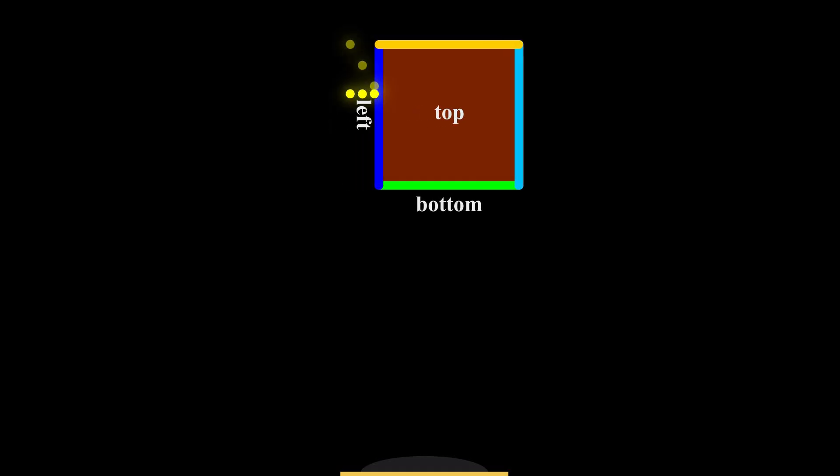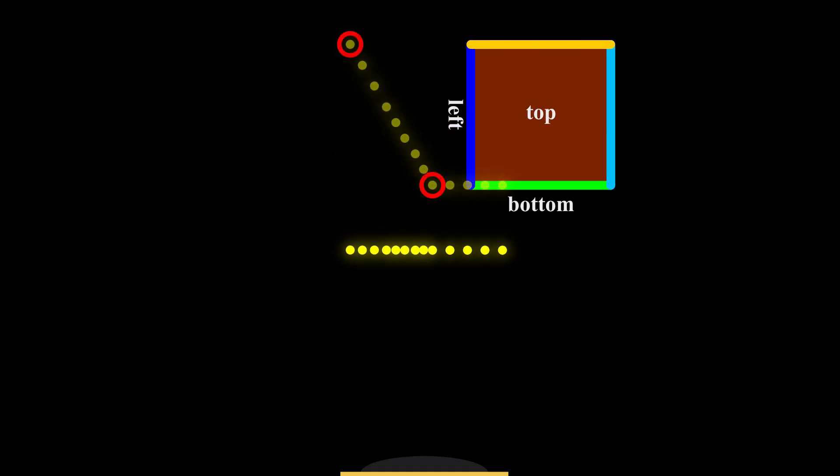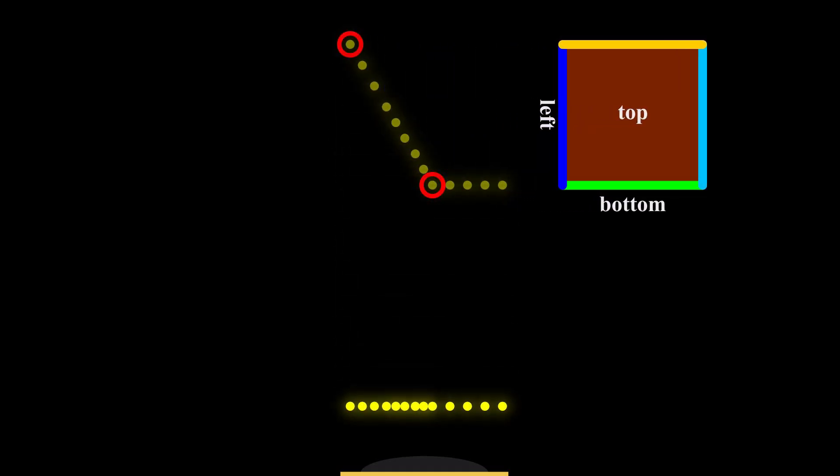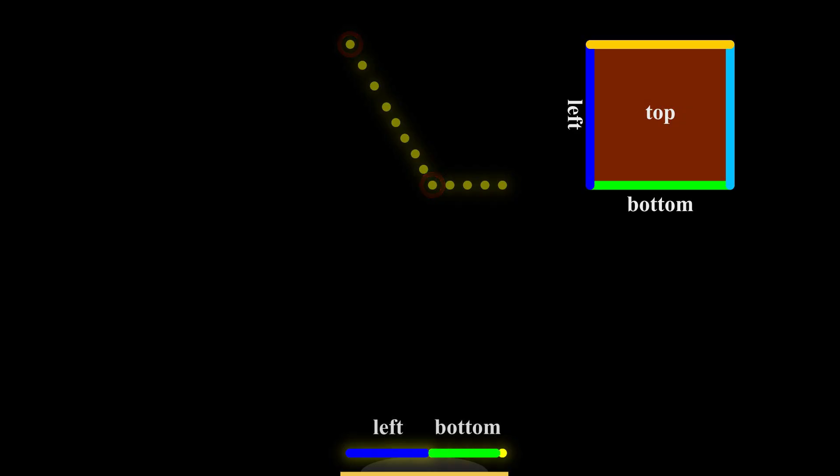However, when the cube accelerates, the light rays from its two left-hand corners no longer align precisely. This causes both the left and bottom surfaces to remain visible simultaneously.